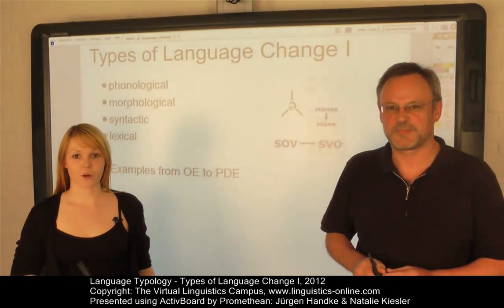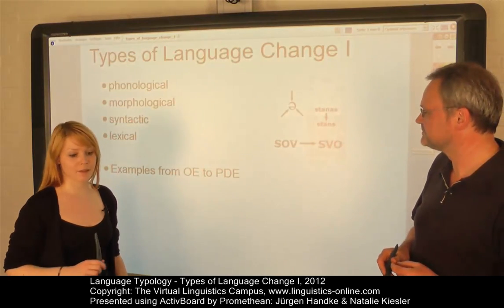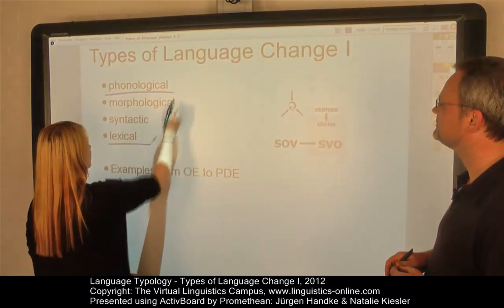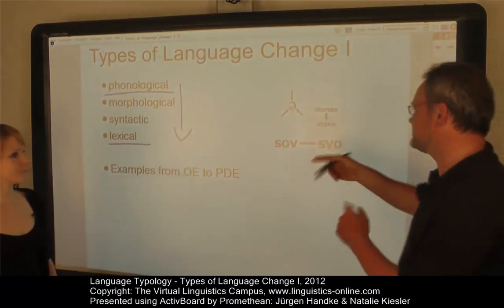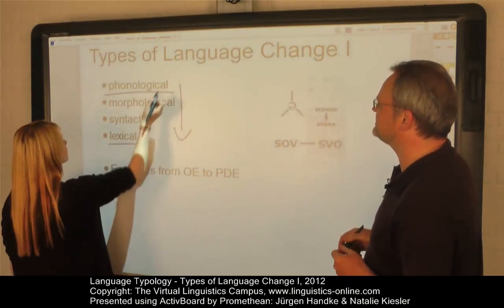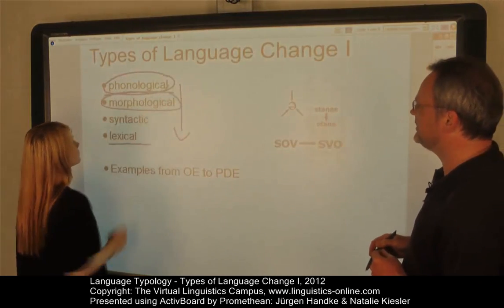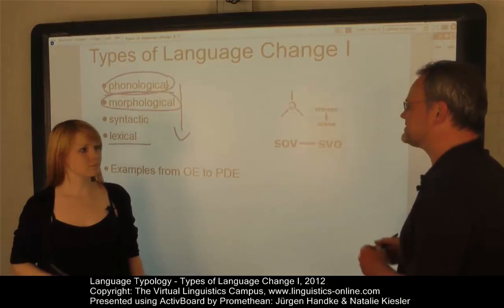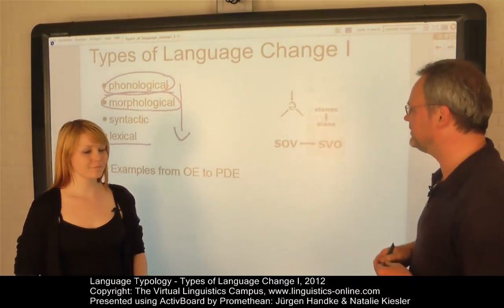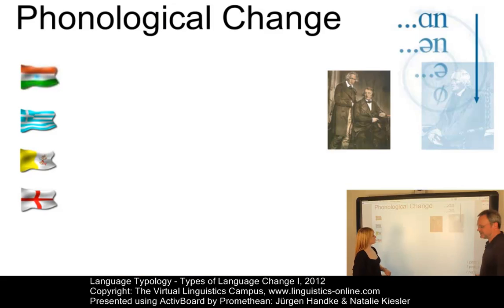All living languages undergo constant changes in which all aspects of language structure are affected, from changes in phonology to changes in the vocabulary. The discussion of all of these would be too much, so we have to confine ourselves in this e-lecture to the first two, namely phonology and morphology, and we'll discuss and postpone other changes — syntax and vocabulary — to another e-lecture. So let's start with phonological change.